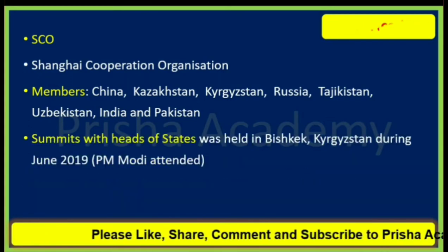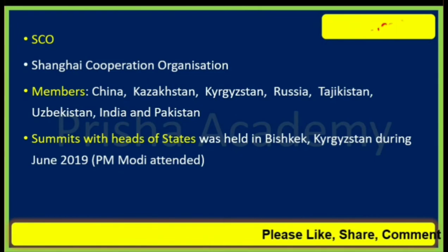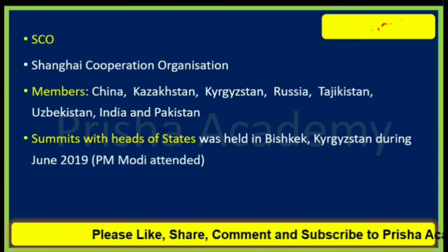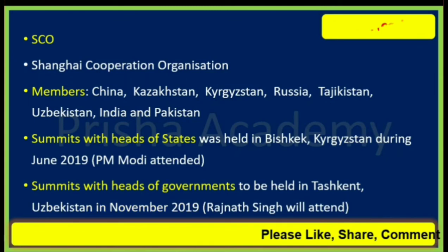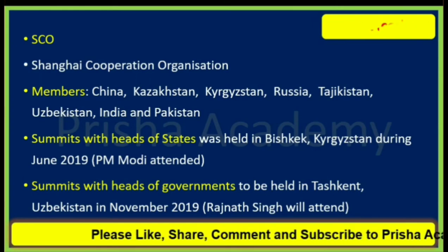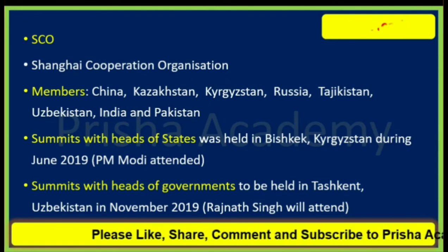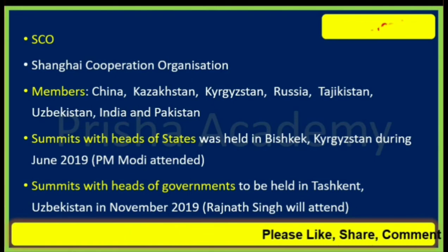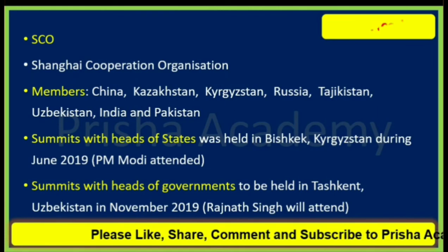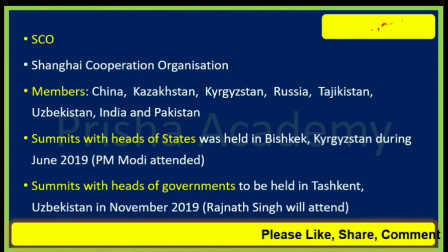The SCO has two kinds of summits. First, the heads of government meeting is planned to take place in Tashkent, Uzbekistan in November 2019, and Rajnath Singh, the Home Minister, will attend this meeting. The heads of states summit was held in Bishkek, Kyrgyzstan in June 2019, and this meeting was attended by Prime Minister Narendra Modi. You have to remember these two different things.